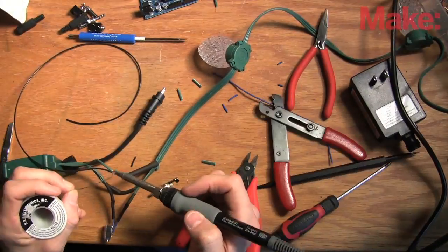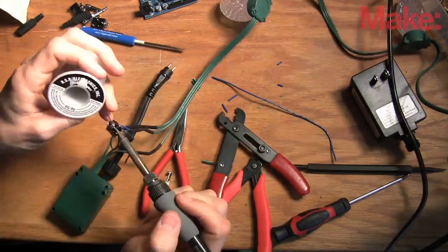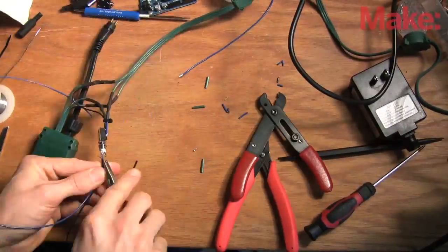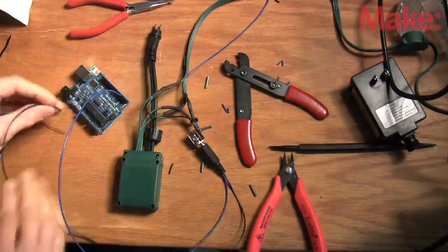Basically, I'm just separating the strands data line from its controller and connecting it to an output pin on the Arduino. The connection is made with an audio jack that returns the connection to the strands controller when I remove the Arduino's plug.